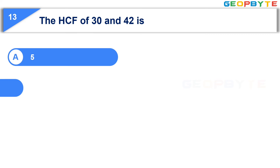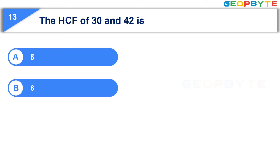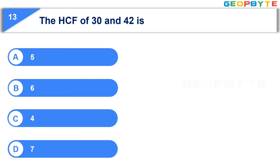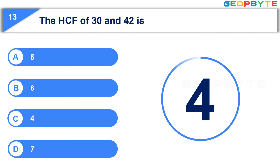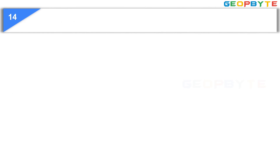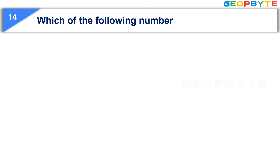The next question is: The HCF of 30 and 42 is — Option A: 5, Option B: 6, Option C: 4, Option D: 7. Your time starts now. Your time is up and the correct answer is Option B, 6.